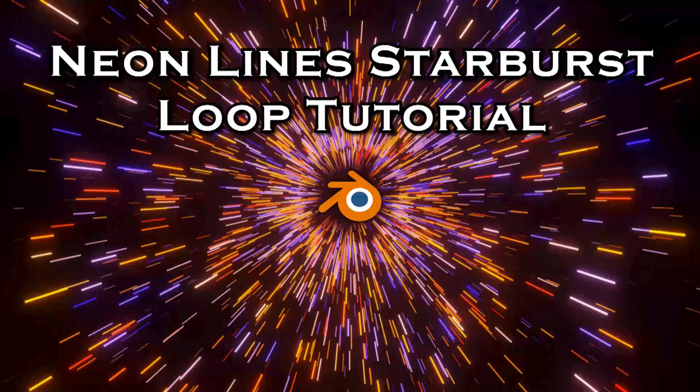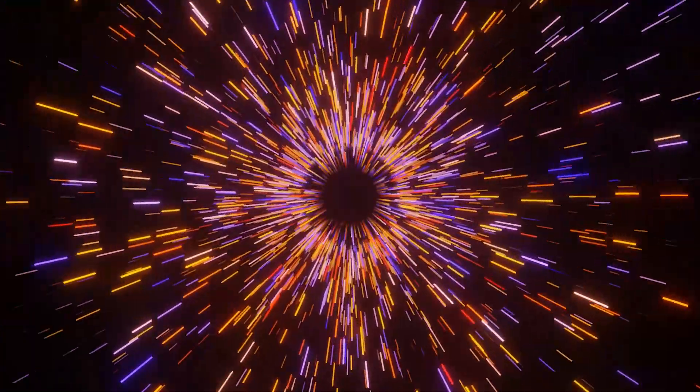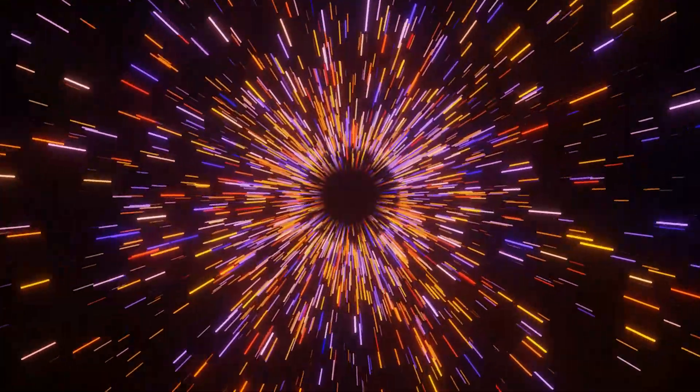You'll also be learning how to use random values to create different colors for different lines, but also how to ensure that the different objects that are being combined together to make up each line retain the same color. A simple follow-up to this video would be the radial neon lines in a starburst effect video, which will be a shorter video just to ensure that you've grasped the concept of looping particle systems.